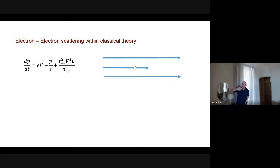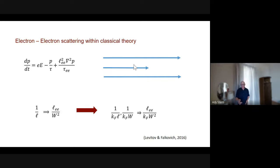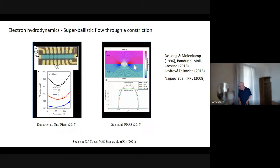This is a big difference: the electron-impurity mean free path comes in the denominator, but the electron-electron mean free path comes in the numerator. That almost suggests we can replace the expression one over k_F times the mean free path and one over k_F times w by the electron-electron mean free path divided by k_F w squared. That observation was made by colleagues Grisha Falkovich and Leonid Levitov a few years ago. What we'll show here is that you can go even lower than this.